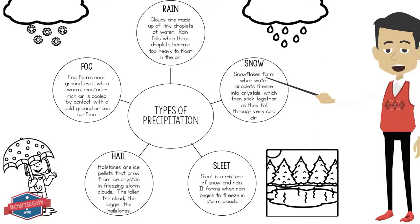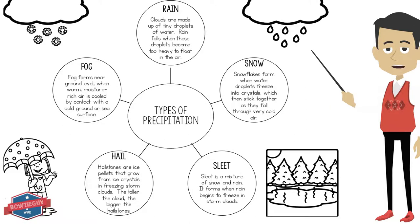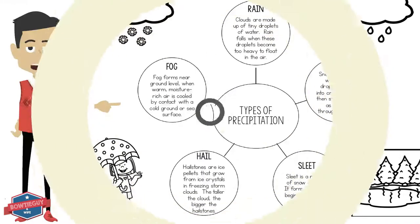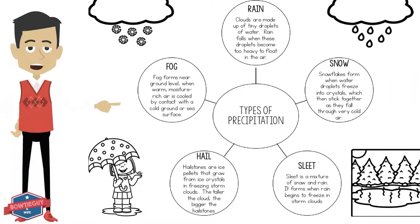Snow. Snowflakes form when water droplets freeze into crystals, which then stick together as they fall through very cold air. Fog forms near ground level when warm, moisture-rich air is cooled by contact with the cold ground or sea surface.